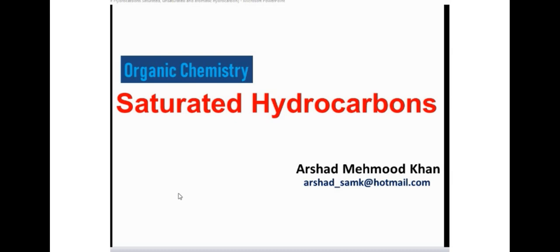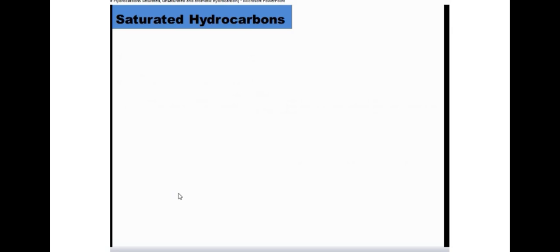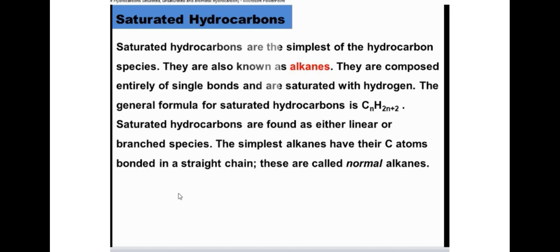Today, the next class of organic chemistry — the topic is saturated hydrocarbons. Saturated, as the name indicates, means the tetravalency of carbon is fully satisfied whenever carbon forms four single covalent bonds, then it is named as saturated. These hydrocarbons are the simplest of the hydrocarbon species. They are also known as alkanes. They are composed entirely of single bonds and are saturated with hydrogen. The general formula for saturated hydrocarbon is CₙH₂ₙ₊₂, where N is the number of carbon atoms.